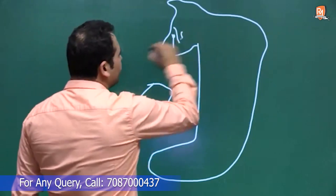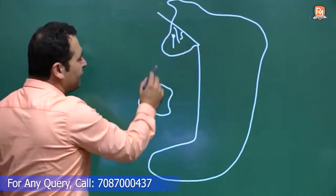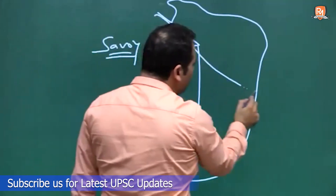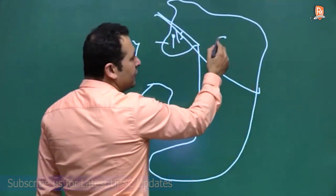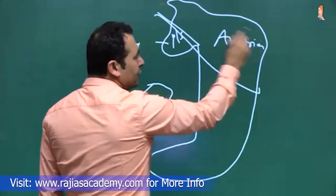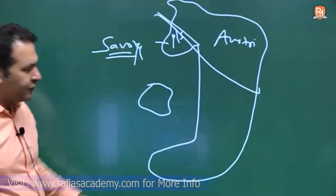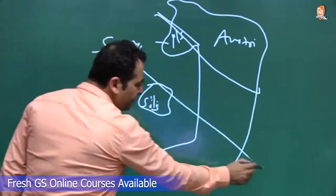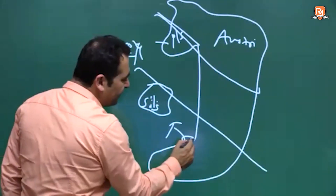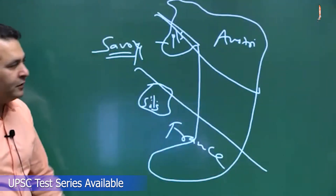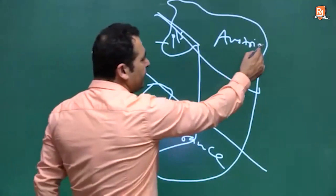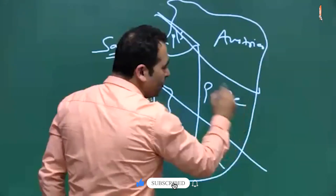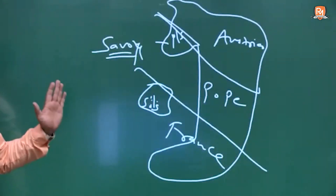The northwestern part is Piedmont-Sardinia, where the Savoy dynasty was ruling. North of Italy was under Austrian control. The island of Sicily in the south was under French control. Central Italy was under the control of the Pope. So Italy was divided into many parts.